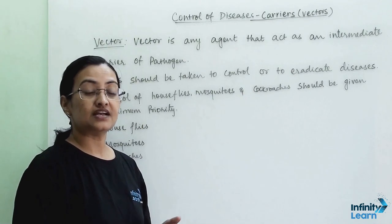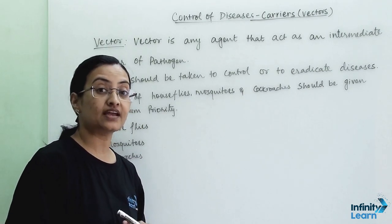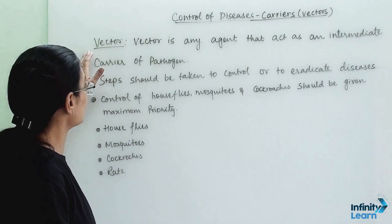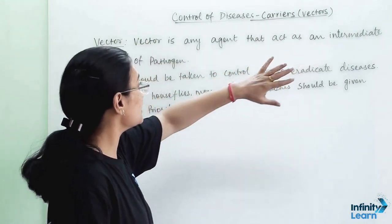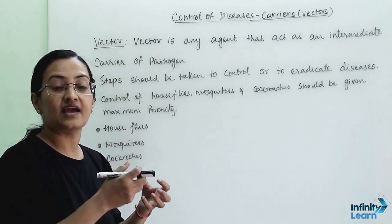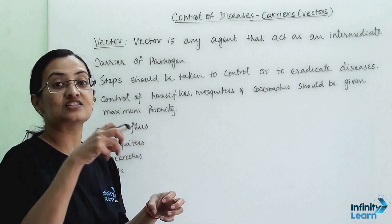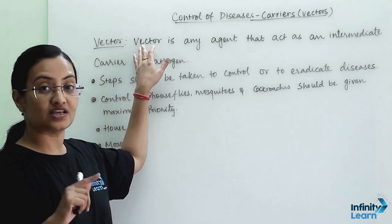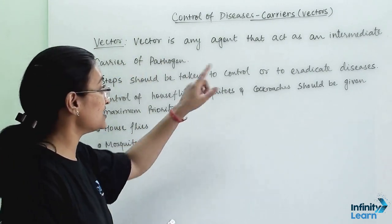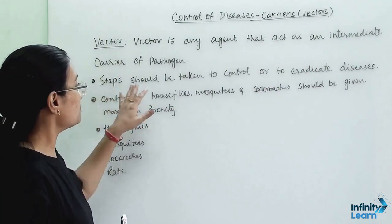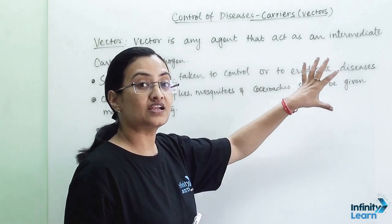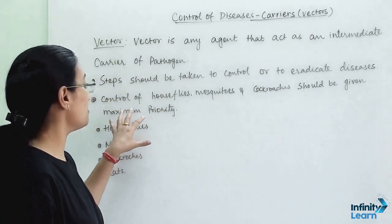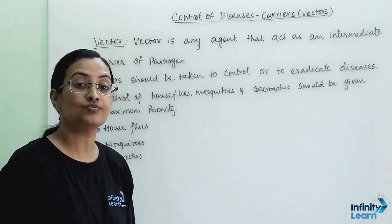Let us understand what a vector is and how they spread diseases. A vector is any agent that acts as an intermediate carrier of a pathogen — they carry the pathogen from one place and spread the infection among humans and animals. Steps should be taken to control or eradicate diseases. Control of houseflies, mosquitoes, cockroaches, and rats should be given maximum priority, as these are the worst enemies of humans and animals.